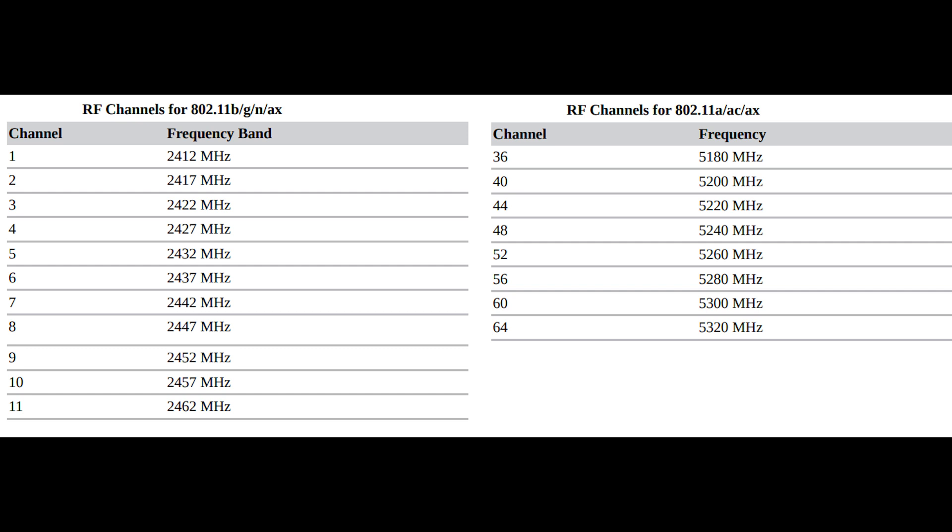In the US, 802.11b and g standards use 11 channels for data communication. Channels 1, 6, and 11 are non-overlapping. Most manufacturers set their default channel to one of the non-overlapping channels to avoid transmission conflicts. With wireless devices, you can select which channel your wireless LAN operates on to avoid interference from other wireless devices that operate in the 2.4 gigahertz frequency range.